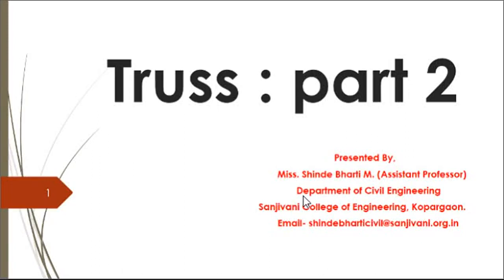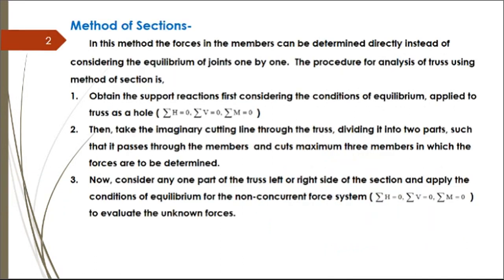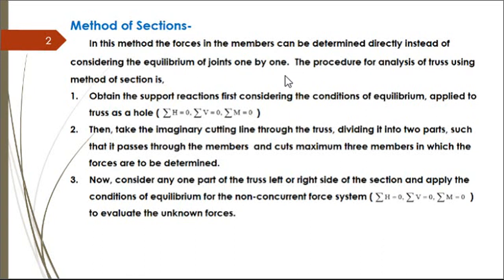Welcome back to the second part of analysis of trusses. In the first part we learned about trusses and the first method of analysis, the method of joints. Now in this second part we are going to learn the second method, the method of sections. In this method, the forces in the members can be determined directly instead of considering the equilibrium of joints one by one. So if it is asked to find forces in a few selected members, instead of going joint by joint we can determine those forces using the method of sections.